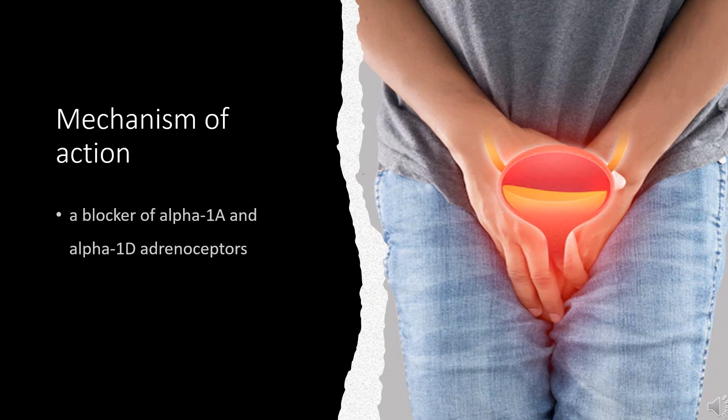Prazosin inhibits the post-synaptic alpha-1 adrenoceptors. This inhibition blocks the vasoconstricting (narrowing) effect of catecholamines — epinephrine and norepinephrine — on the vessels, leading to peripheral blood vessel dilation. Through blood vessel constriction via adrenergic receptor activation, epinephrine and norepinephrine normally act to increase blood pressure.